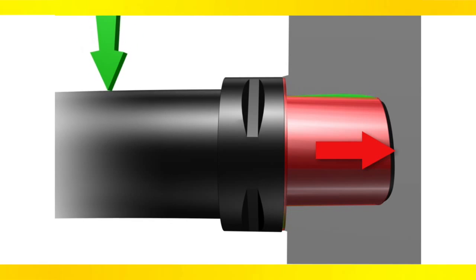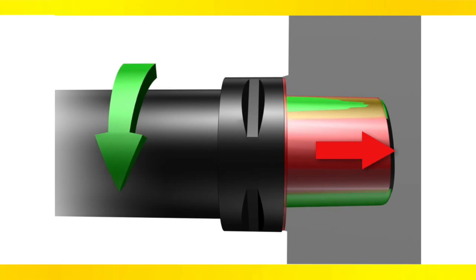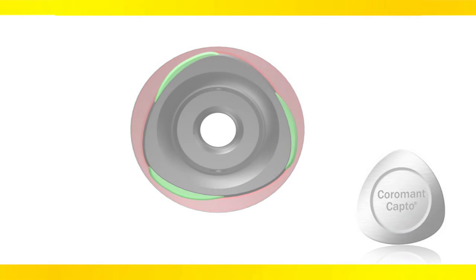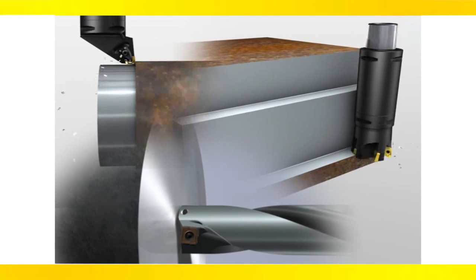As it turns, the tapered polygon locks tightly for high-torque transmission and resistance to twisting. Coromant CAPTO's simultaneous face and taper contact makes it strong in all applications.